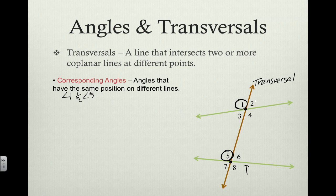If we look at angle two, which is in the upper right-hand corner of the four angles made with this transversal and this line, the upper right-hand corner of this intersection would be angle six. So angle two and angle six would be a pair of corresponding angles.